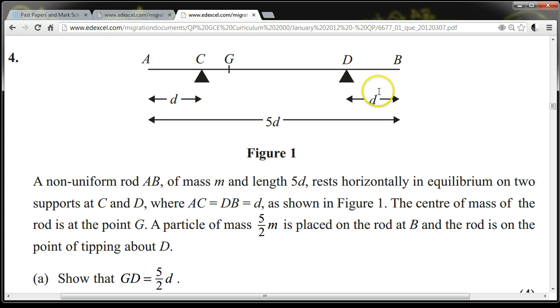The centre of mass of the rod is at the point G. A particle of mass 5M over 2 is placed on the rod at B, and the rod is on the point of tipping about D. Show that GD equals 5D over 2.